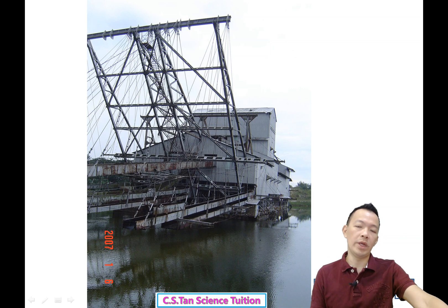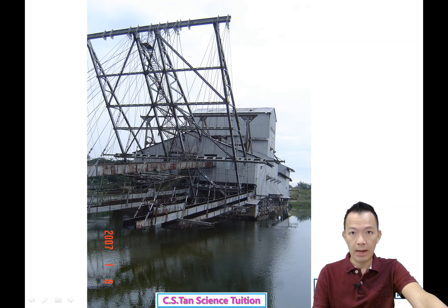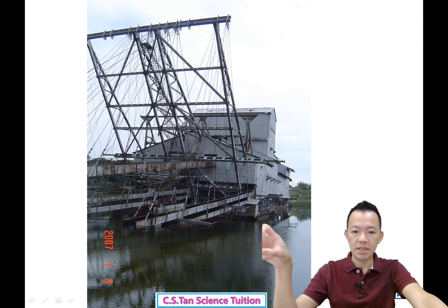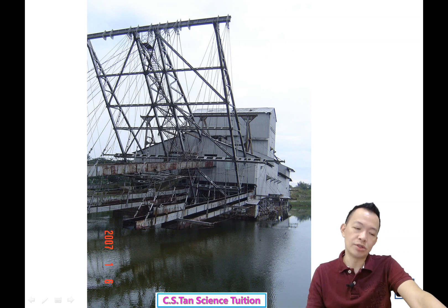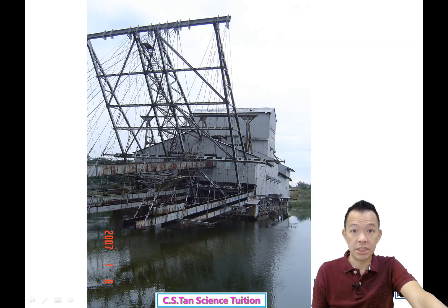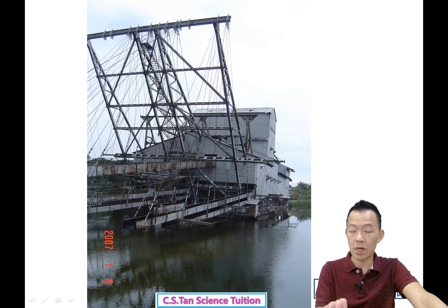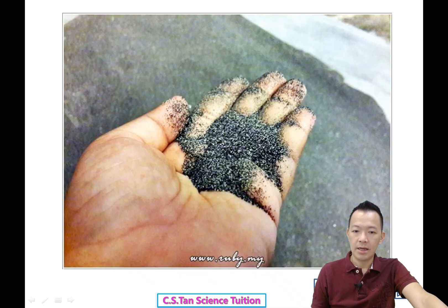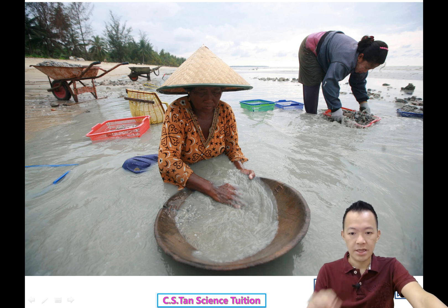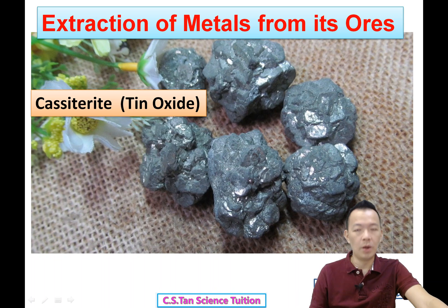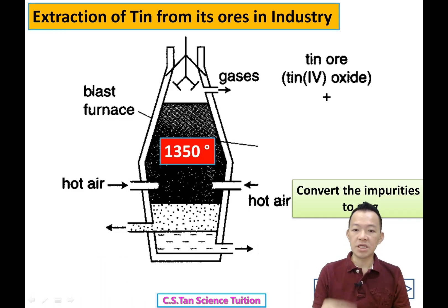Somewhere around Perak, or last time actually from Bahang. Last time actually our company MSC was having tin mines in Indonesia, and they would take back the tin from Indonesia. But now actually no more. So this is the tin ore — tin oxide. You can also wash it. This is the tin ore — some examples of tin ore.